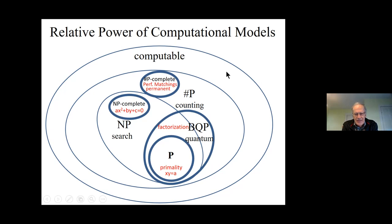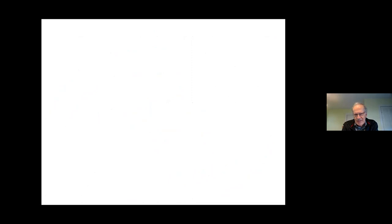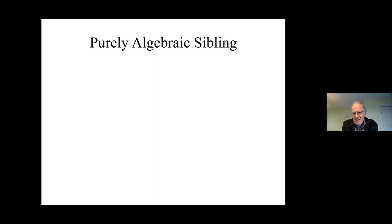Subject to the fact that all these classes could collapse — except computable won't collapse to P — otherwise all these classes could collapse to P. There are a few odd problems like integer factorization which aren't known to be complete in a class. This is all formulated in terms of Turing machines and discrete complexity, but what I'll discuss now is a bit more algebraic. In some sense all this development of complete problems could have happened in a purely algebraic setting outside of computation.